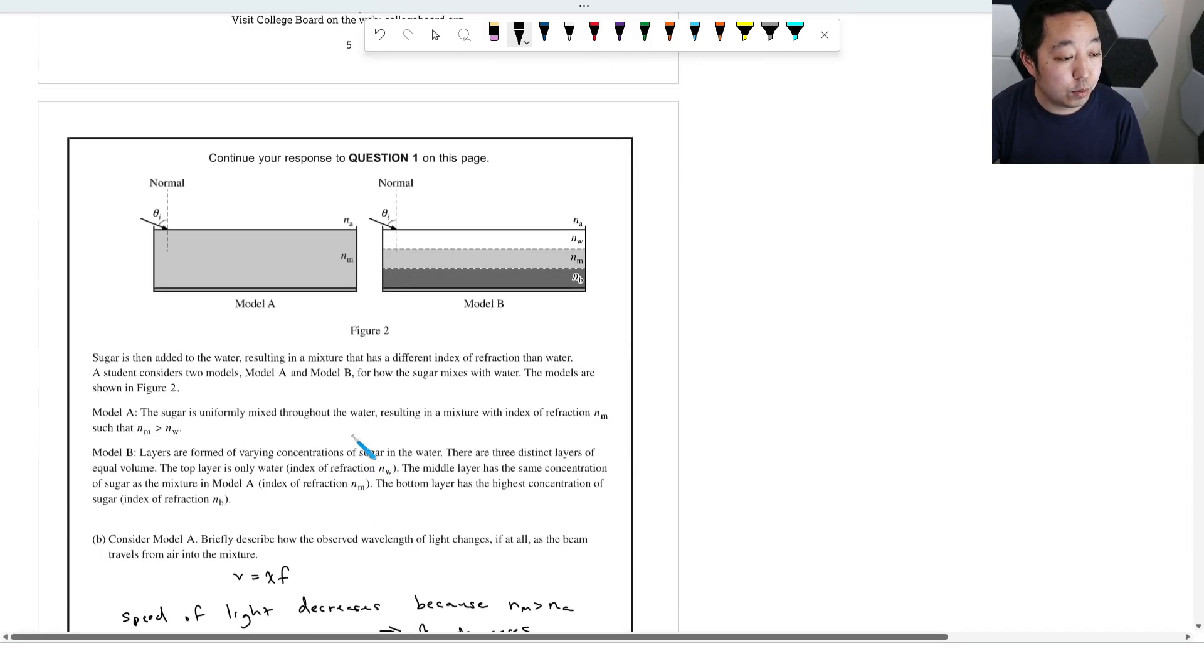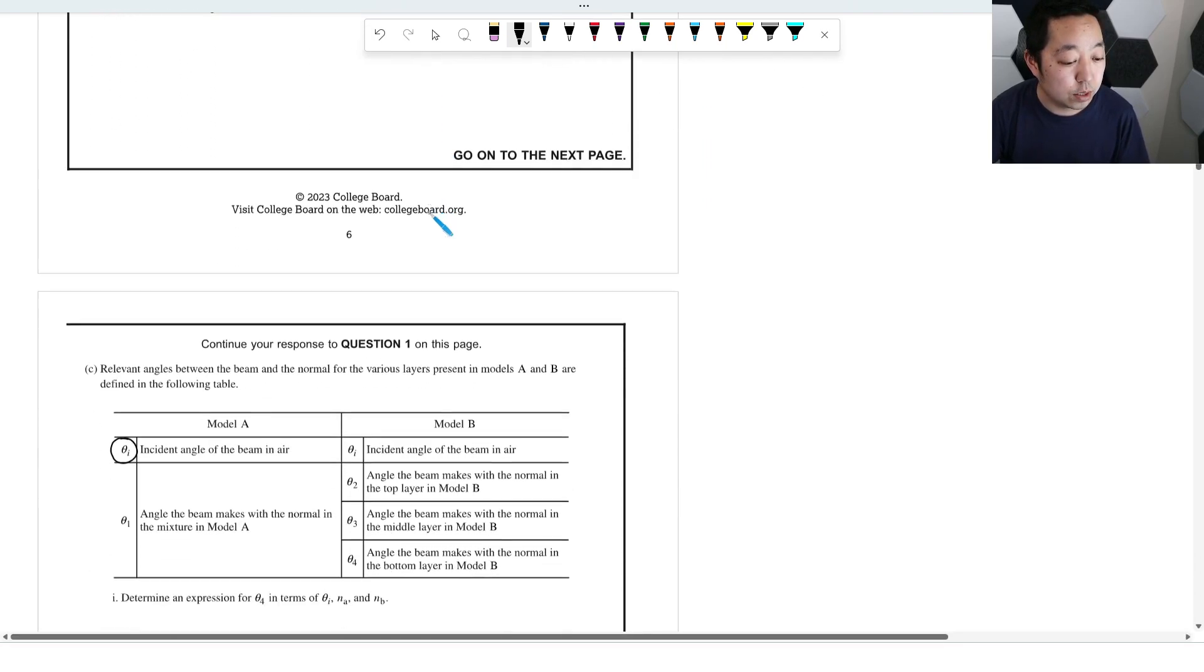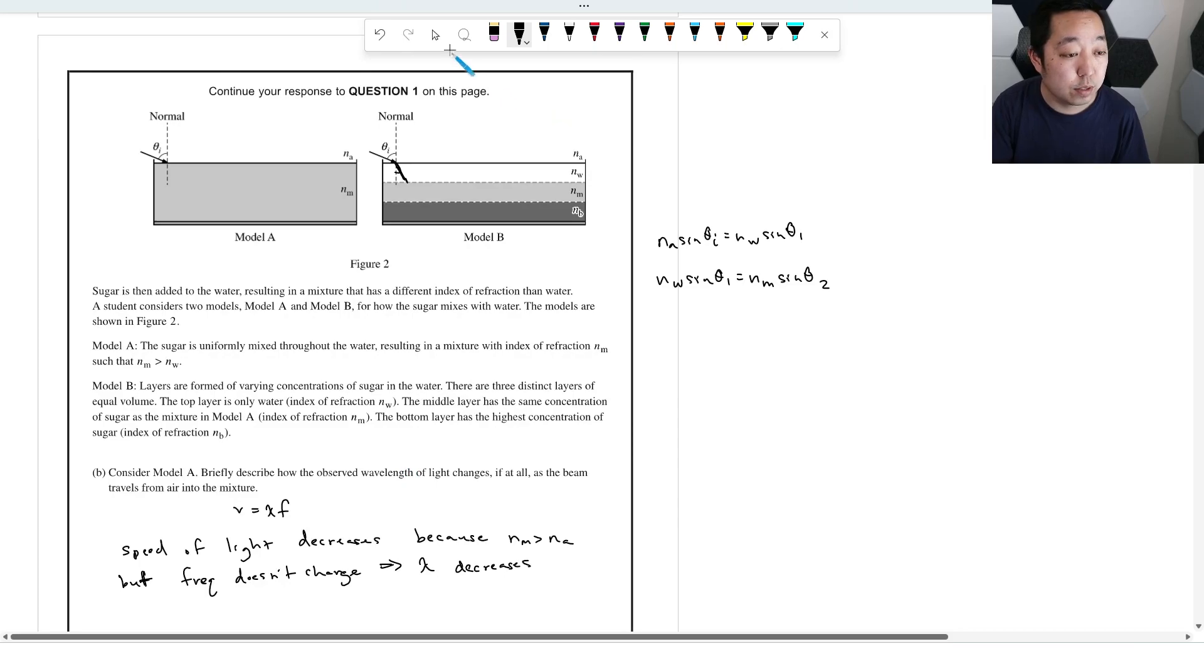So if you look at theta 4, what you're going to think about is the angle here through this, it's going to be Snell's law. You're going to say NA sine theta I is equal to NW sine theta 1. But then that angle is going to match the angle there, so then you're going to have NW sine theta 1 equals NM sine of theta 2. This one here. Oh actually, what is it? Sorry, it's 2 and 3 and 4. This one is 2, this one here is theta 1, this is theta 2, this is theta 3, theta 4.